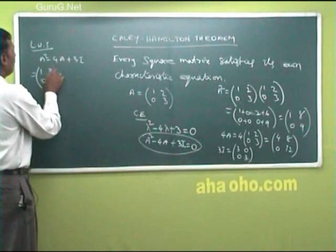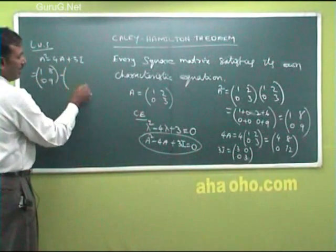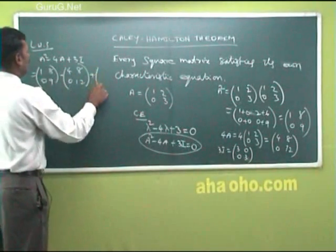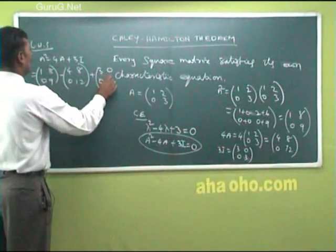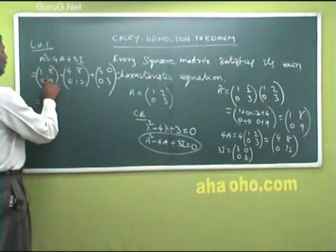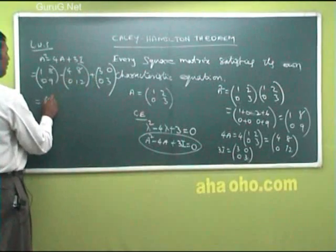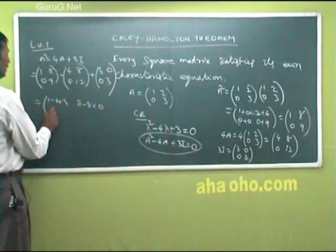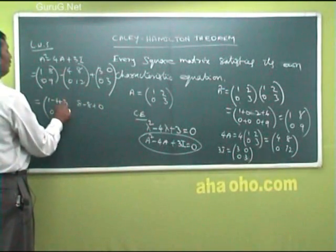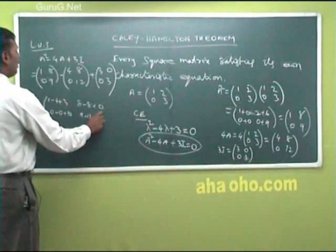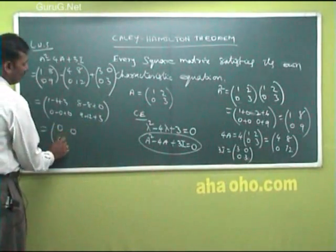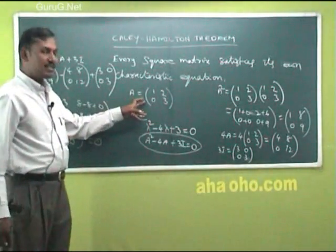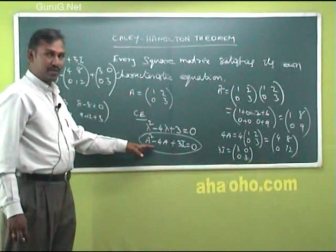So A squared minus 4A plus 3I equals [1, 1; 0, 9] minus [0, 4; 8, 12] plus [3, 0; 0, 3]. Simplifying: 1−4+3 = 0, then 8−8+0 = 0, then 0−0+0 = 0, then 9−12+3 = 0. The result is the zero matrix [0,0;0,0].